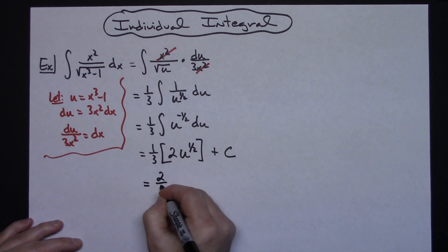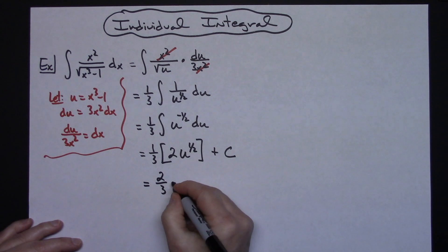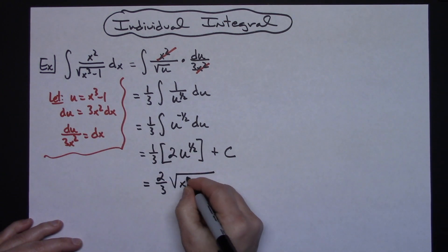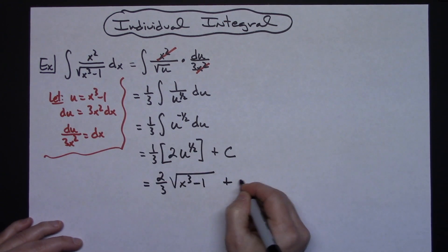So the final answer is going to look like 2/3. Turning that back into a square root and replacing u, we'll have √(x³ - 1) + C.